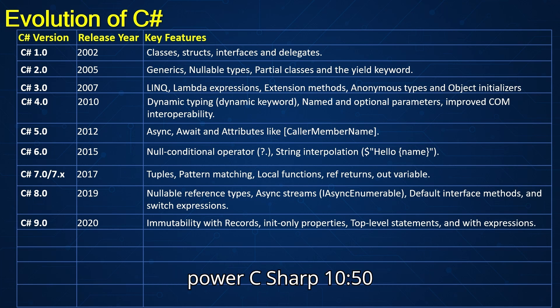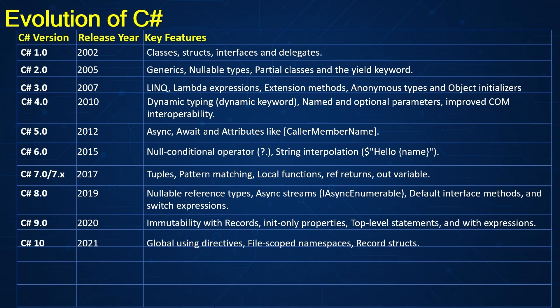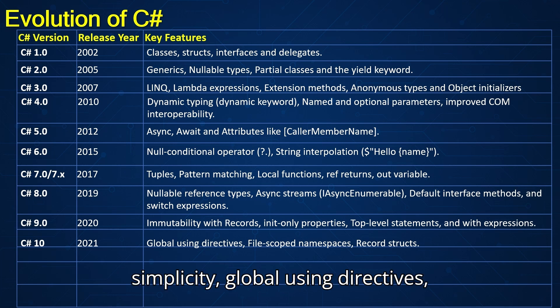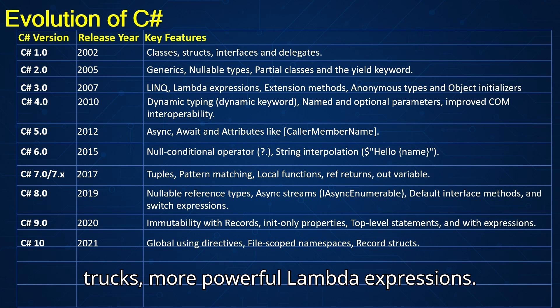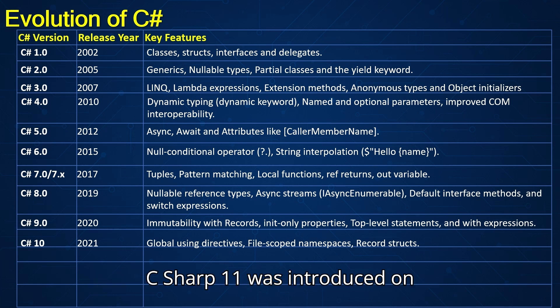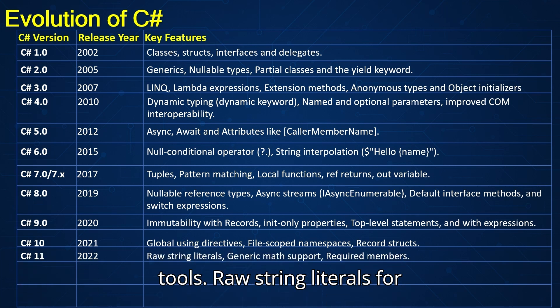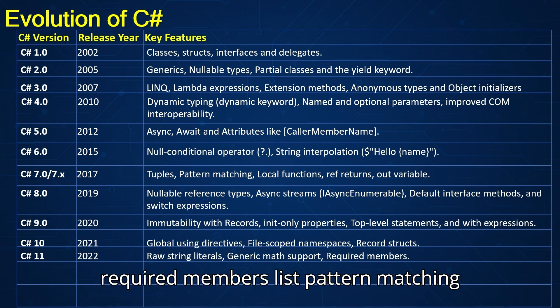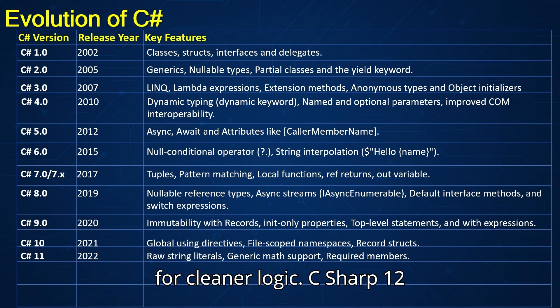Simplicity and power — C-sharp 10 was introduced in 2021, emphasizing simplicity: global using directives, file-scoped namespaces, record structs, and more powerful lambda expressions. C-sharp 11 was introduced in 2022 — modern developers got more tools: raw string literals for multi-line text, generic math support, required members, and list pattern matching for cleaner logic.